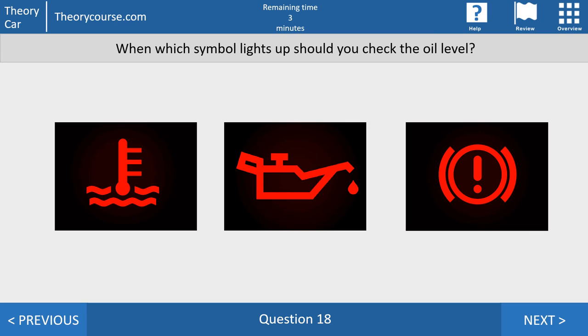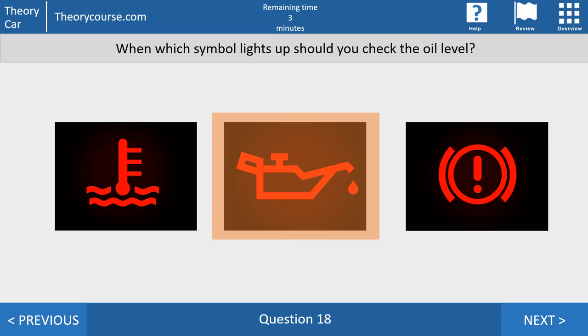Question 18. Which symbol lights up should you check the oil level? And this is the middle symbol. This one has to do with the oil. The first one has to do with the coolant and the last one has to do with your brakes.